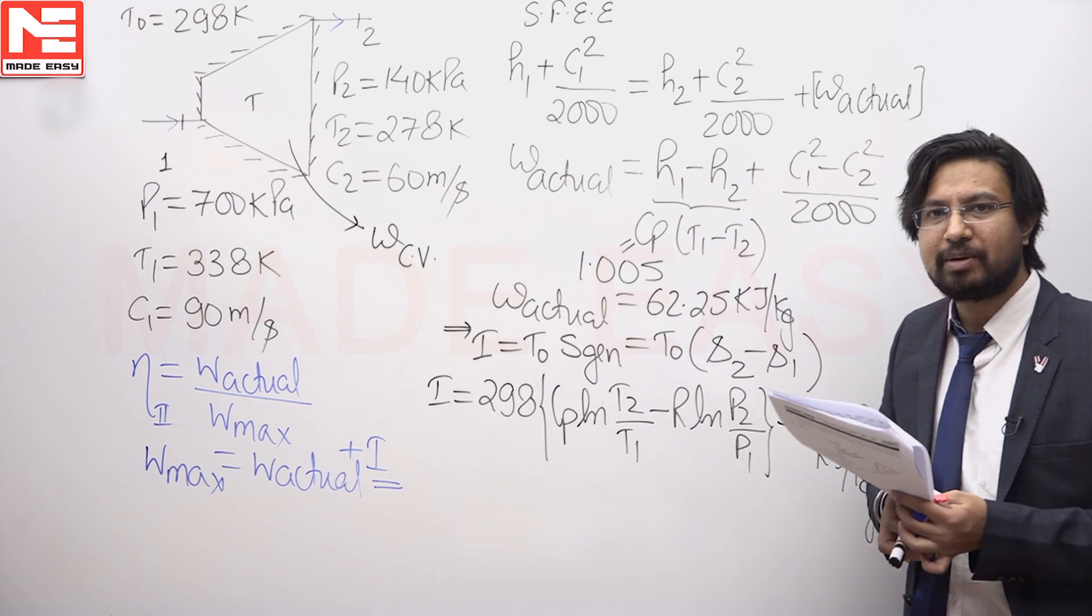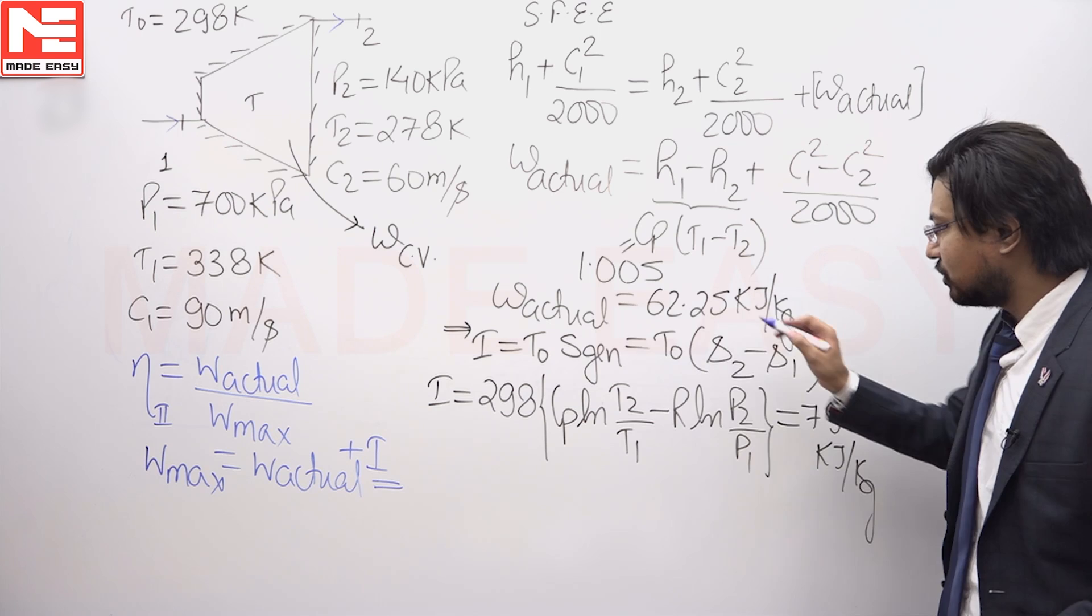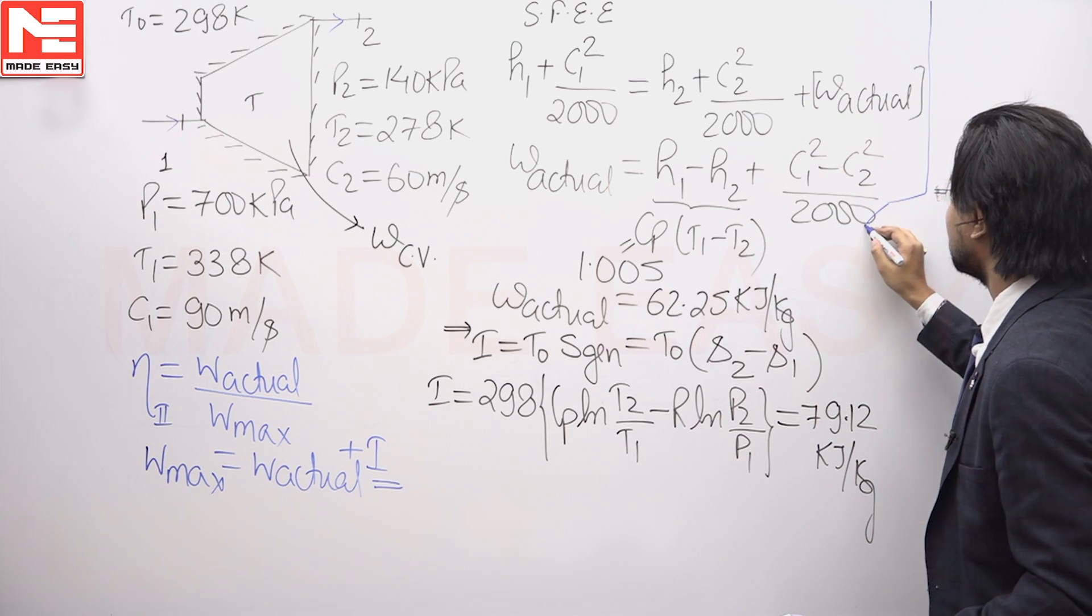We can see if this irreversibility is not happening, the maximum work will be equal to actual work plus this. I can actually write the second law efficiency like this.